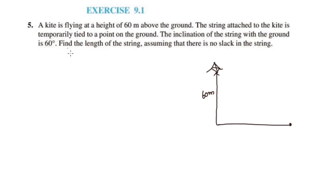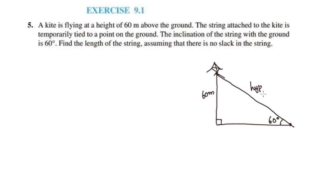The inclination of the string is 60 degrees above the ground. Find the length of the string. The form of the right-angle triangle — it is the hypotenuse involved. This string adds a length.